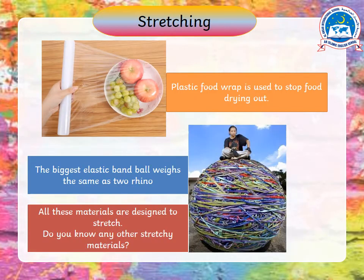Here we have some other materials. In the first picture you can see a plastic food wrap — you must have seen this in your kitchen. Your mom uses it to wrap food to keep it from drying out. And here, look at this giant ball — this is the world's largest elastic band ball. It weighs as much as two rhinos! People made these out of rubber. So all these materials are designed to stretch.